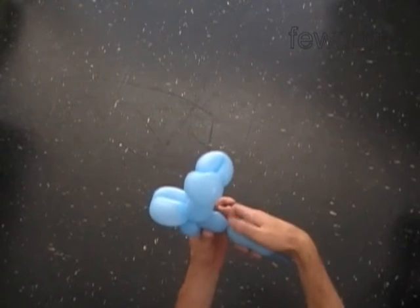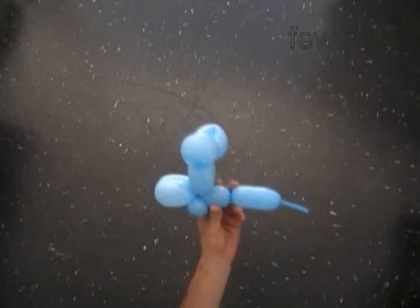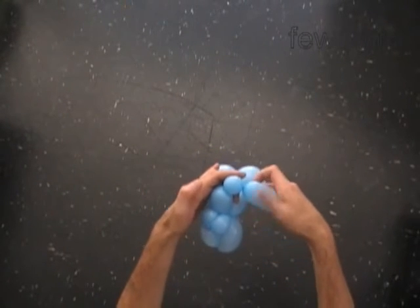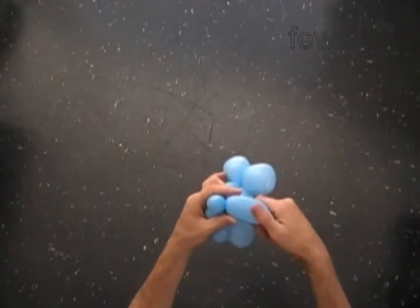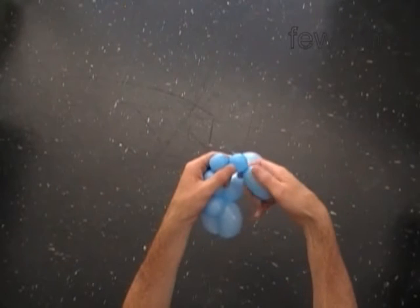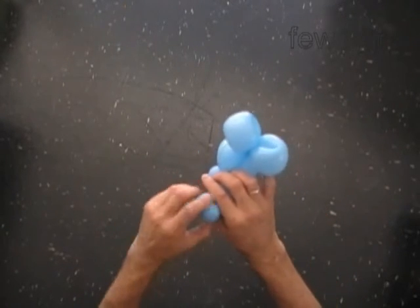Twist the ninth 1 inch bubble. Twist the eighth 1 inch bubble. Lock both ends of the chain of the last two bubbles in one lock twist.